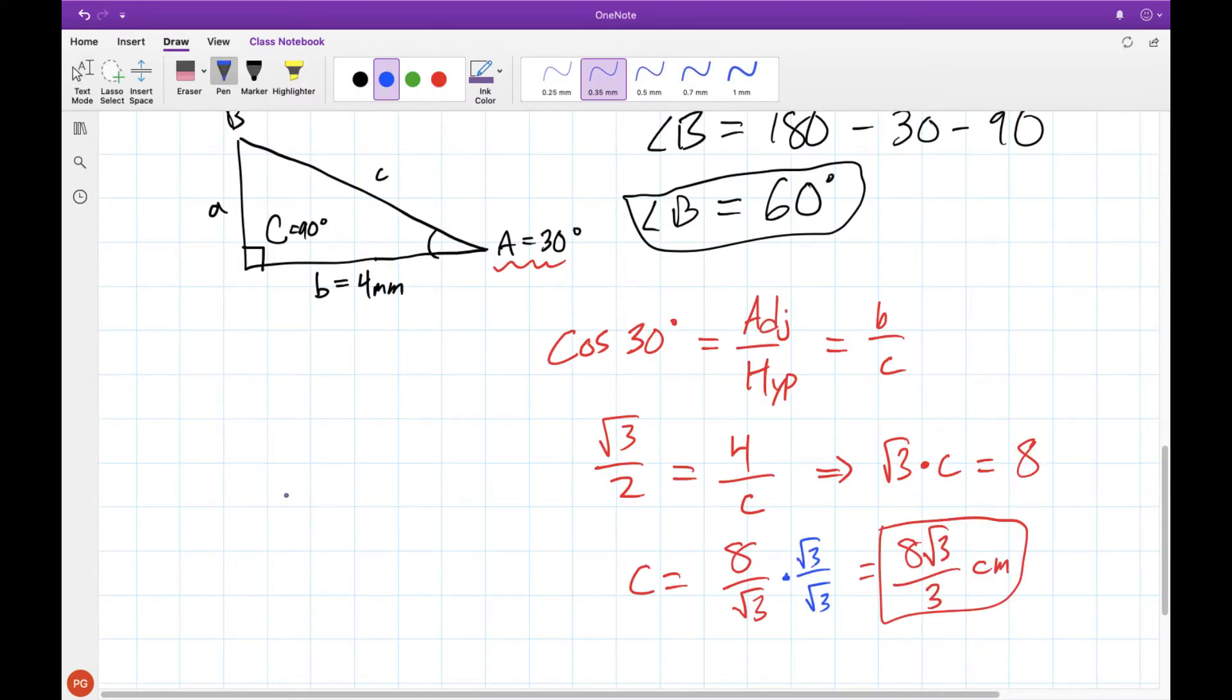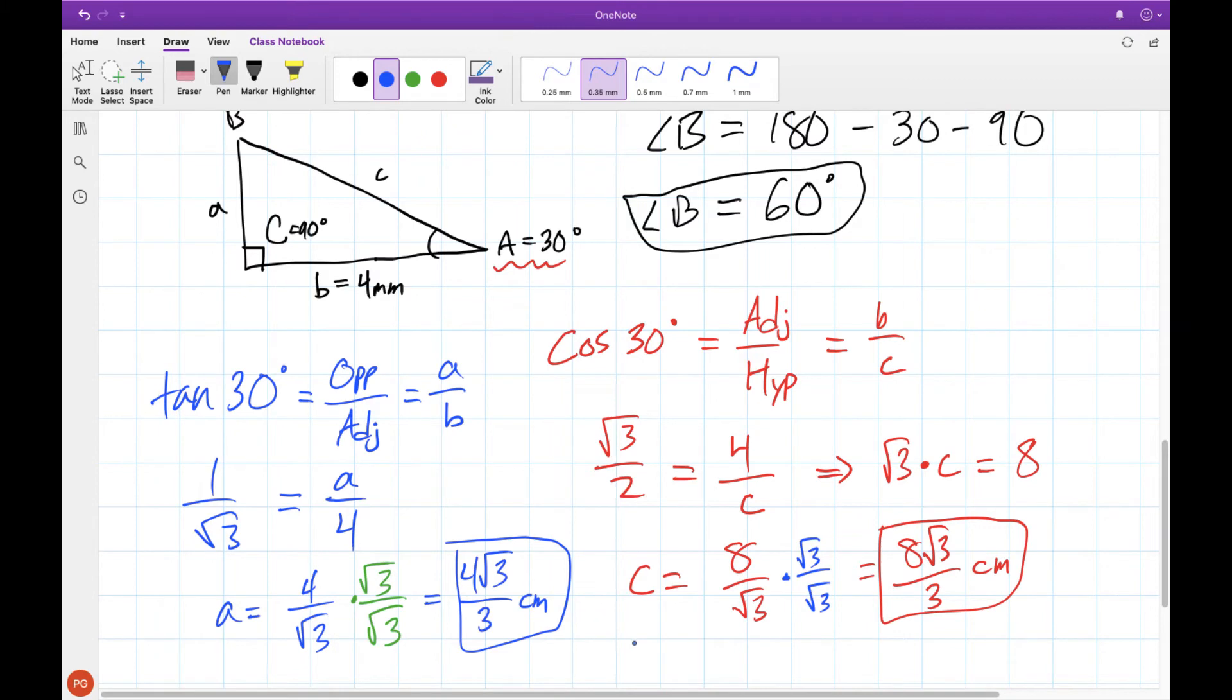Finally we need to solve for our side A in this case. For this one I'm going to use tangent and I'll stick with 30 degrees this time. When we're doing tangent it's always opposite over adjacent, which in this case is A over B. Tan of 30 degrees is one of our special angles again, so we know this is exactly 1 over root 3, which will be equal to A over 4. Multiply both sides by 4 to isolate for A and we get our answer right there.